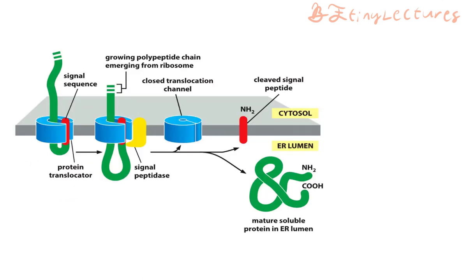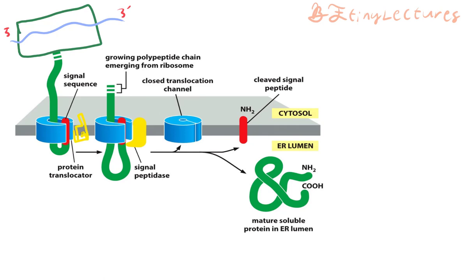Now attached to the protein translocator, signal peptidase — an enzyme — cleaves the signal sequence. The signal sequence remains within the ER membrane, and the protein is released into the ER lumen in a folded configuration. These proteins are soluble proteins produced within the ER lumen.